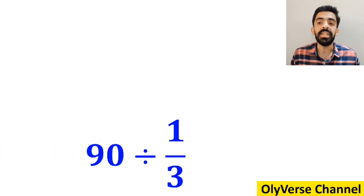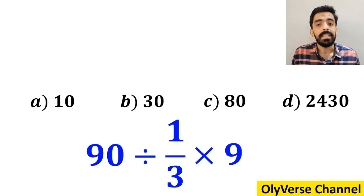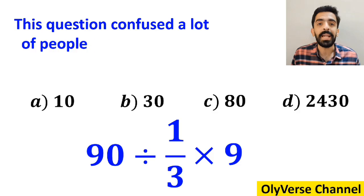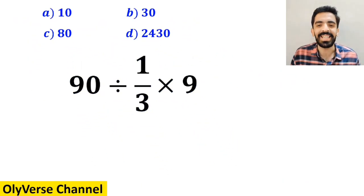What is the value of the expression 90 divided by 1 over 3 multiplied by 9? Which option do you think is the correct answer to this question? This question confused a lot of people and made them choose the wrong option. Let's take a closer look and solve it together.